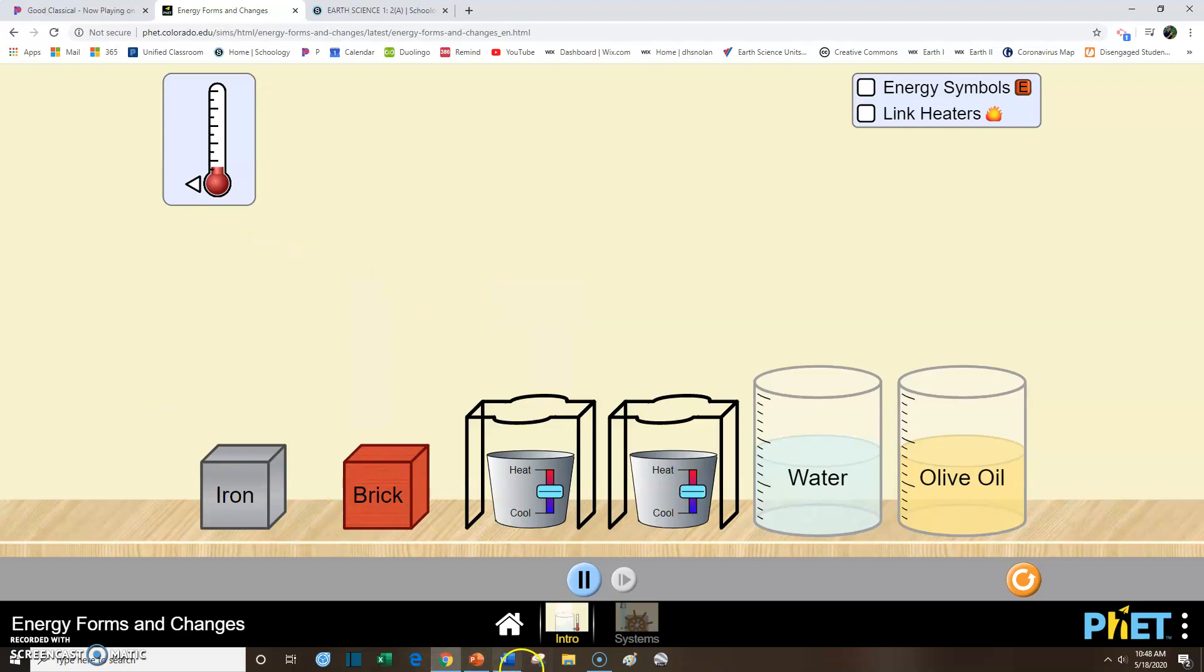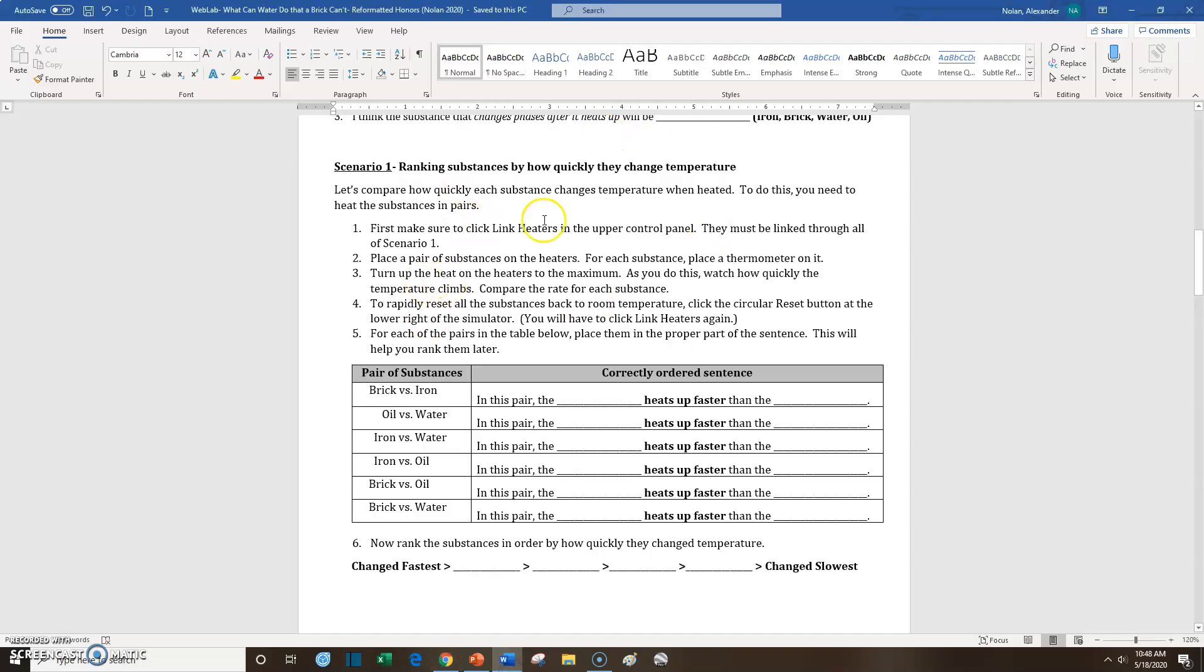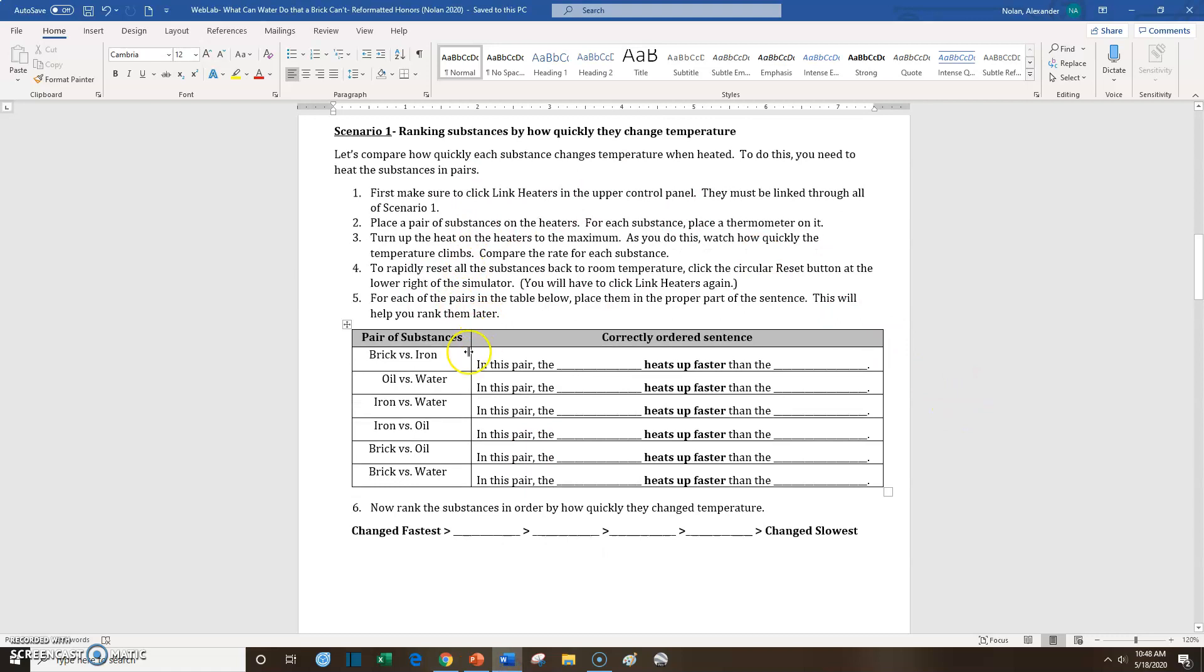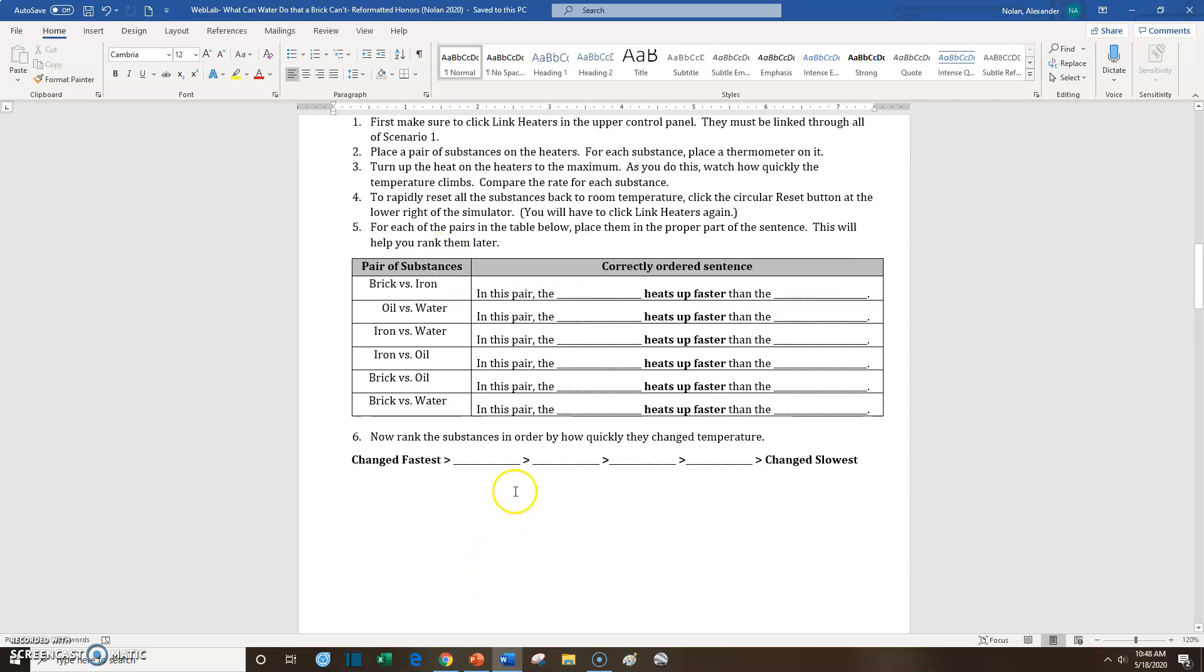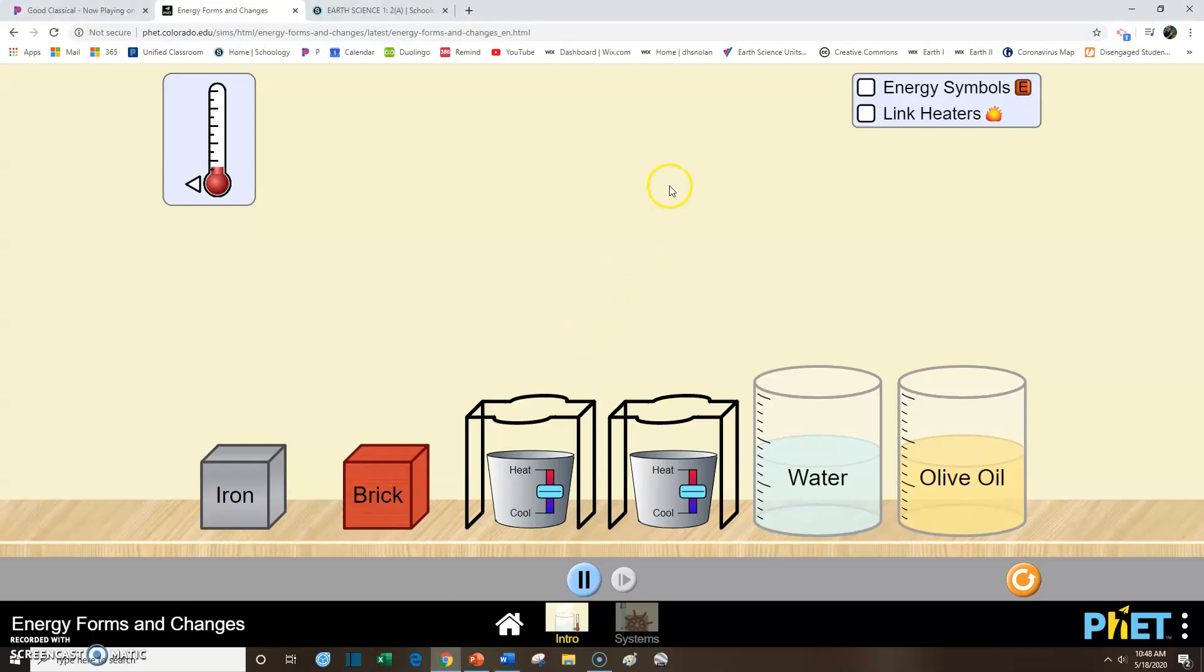This will open up. And the first thing that this simulator asks you to do is to take a pair of substances, set them on the burners, and heat them up, and see which ones heat cooler and which ones heat faster, or which ones heat up the fastest. So we're going to compare brick and iron, oil and water, iron and water, iron and oil, brick and oil, and then brick and water. So in each of these situations, we're going to see which one heats up fastest, and then I'm going to leave it to you to rank them. How do you actually rank them once you figure that out?